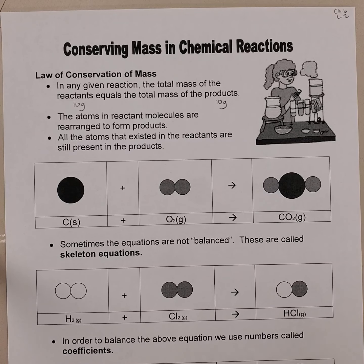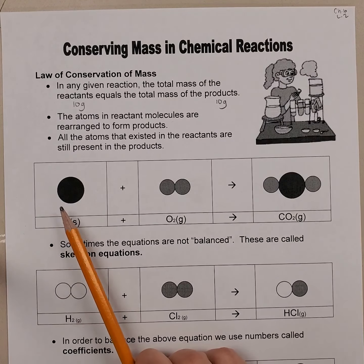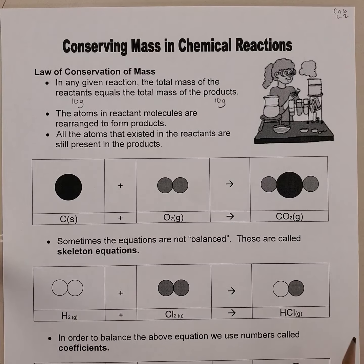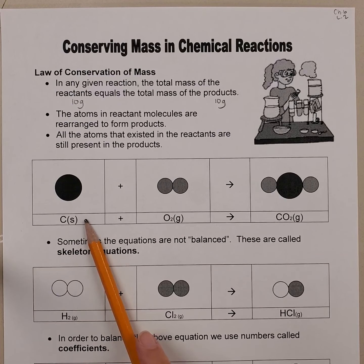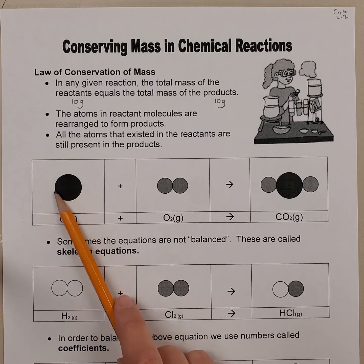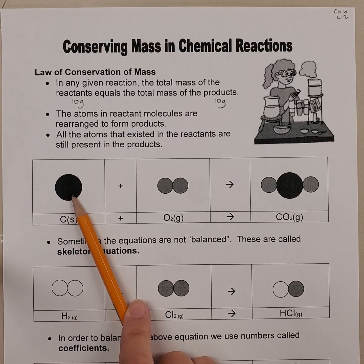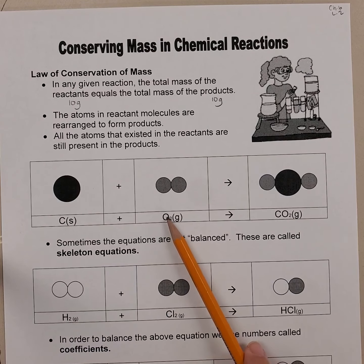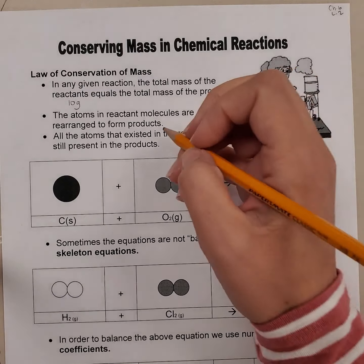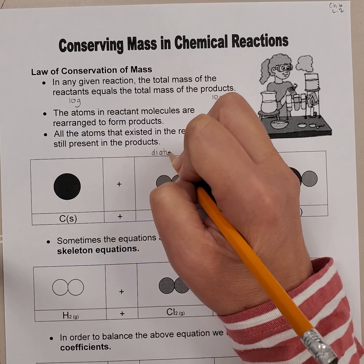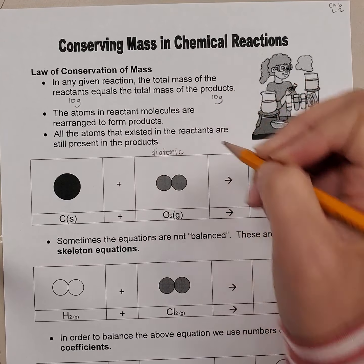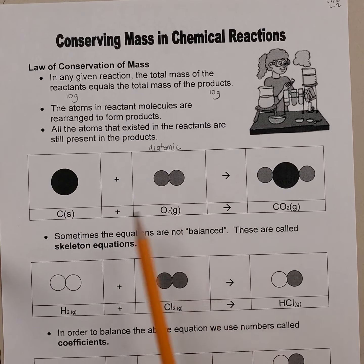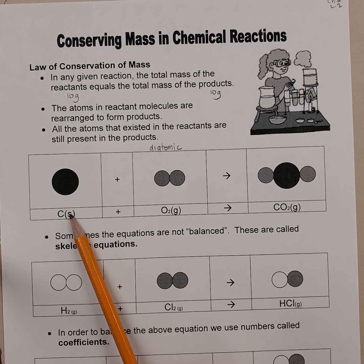Let's take a look at this first reaction. The circles represent the atoms of various elements. We're going to start with carbon — one atom of carbon. We're going to add it to oxygen. Oxygen is written as O2 because, as you may recall from your lesson on molecular compounds, oxygen is a diatomic element. So we're going to react carbon plus oxygen.